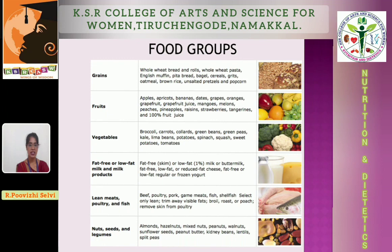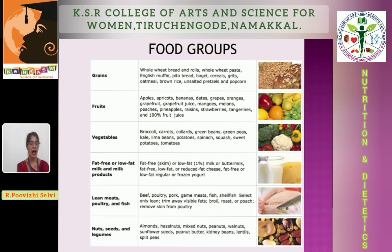Next is food groups. Foods are classified into different food groups depending upon their nutritive value, and the diet should be balanced. Food should be chosen from each food group in sufficient quantity — cereals and pulses adequately, fruits and vegetables liberally, animal foods moderately, and oils and sugars sparingly.